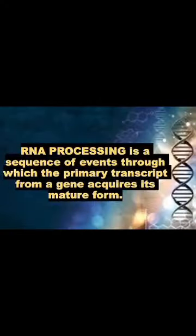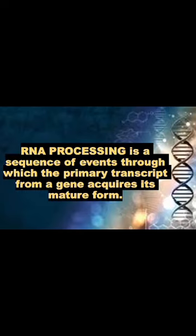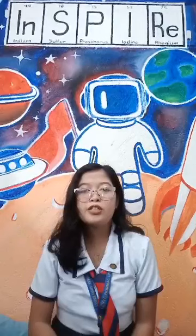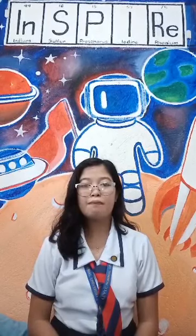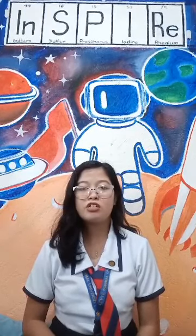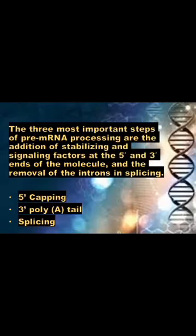RNA in one form or another touches nearly everything in itself. RNA processing is a sequence of events through which the primary transcript from a gene acquires its mature form. RNA carries out a broad range of functions, from translating genetic information into molecular machines of the cell, to regulating the activities of the genes during development, cellular differentiation, and changing environments. The three most important steps of pre-mRNA processing are the addition of stabilizing and signaling factors at the 5' and 3' ends of the molecule and the removal of the introns in splicing. These processes include 5' capping, 3' poly A tail, and splicing.